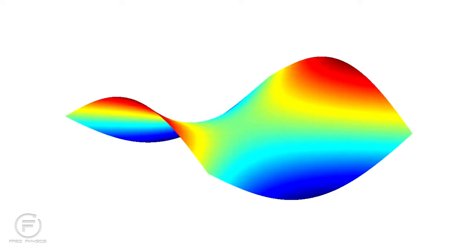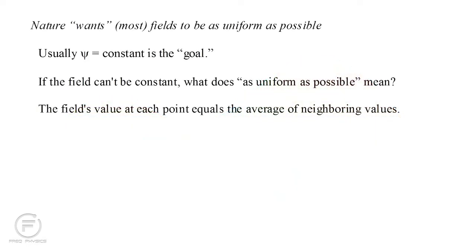What determines this equilibrium shape? The answer is that the field value at each point equals the average of the neighboring values. This is what as uniform as possible means in general.